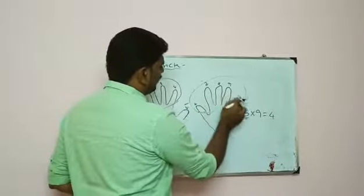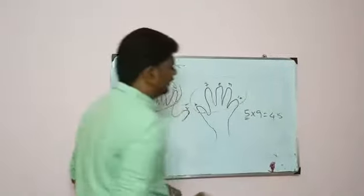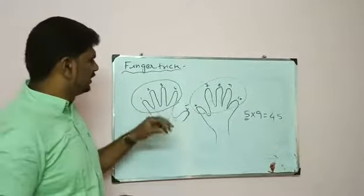So 5 into 9 equals 45. The answer is 9 times 5 equals 45. Here is another example.